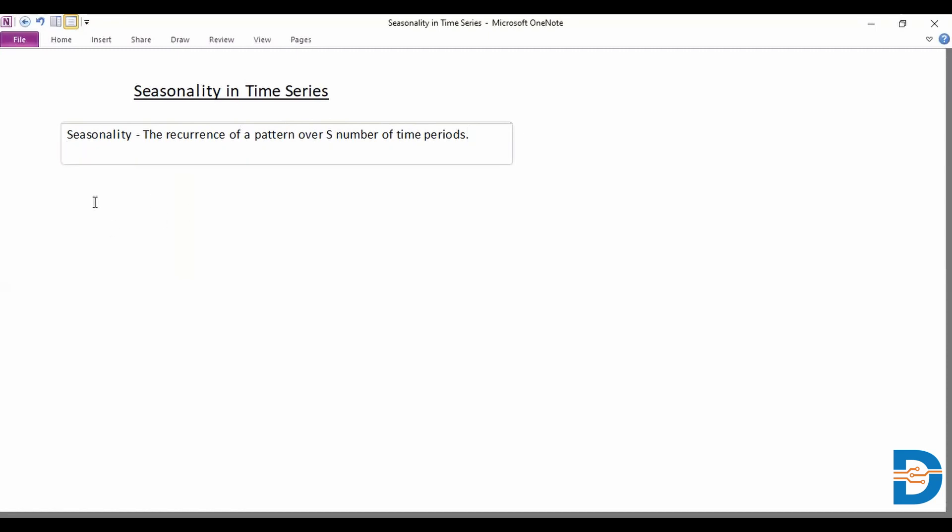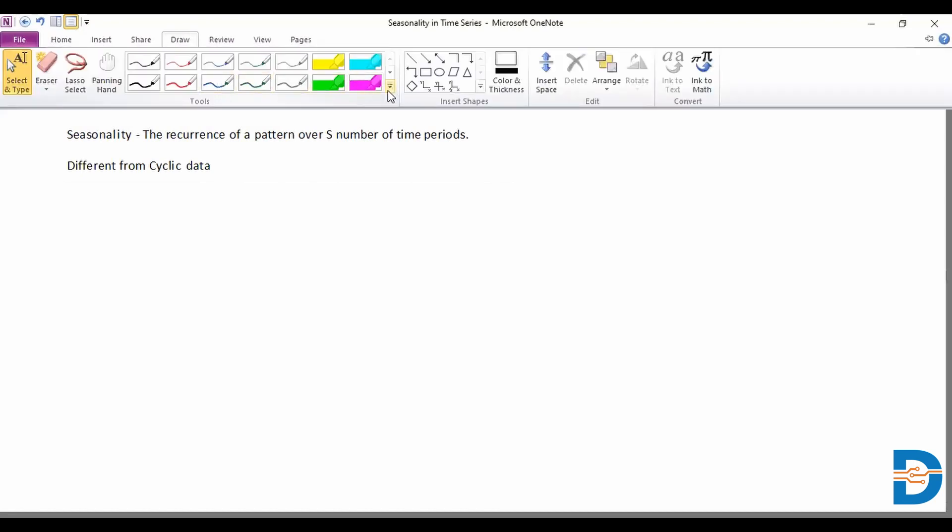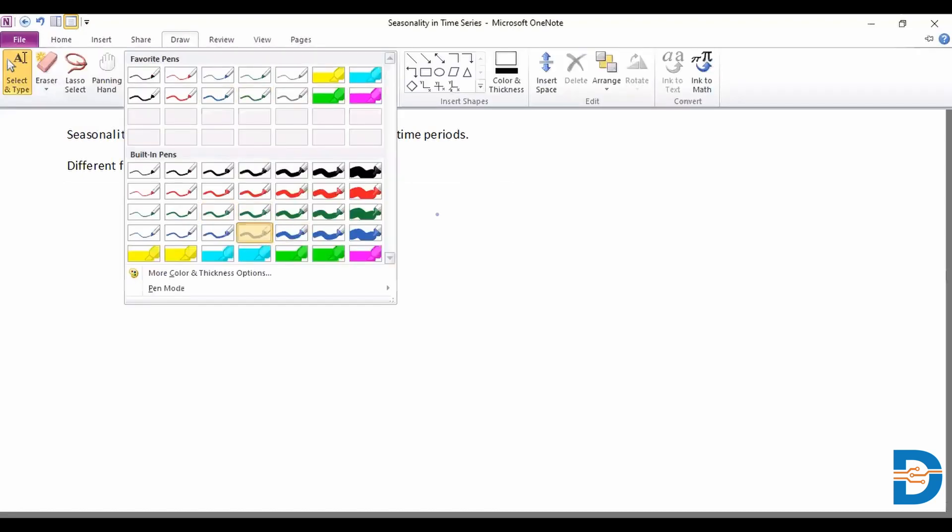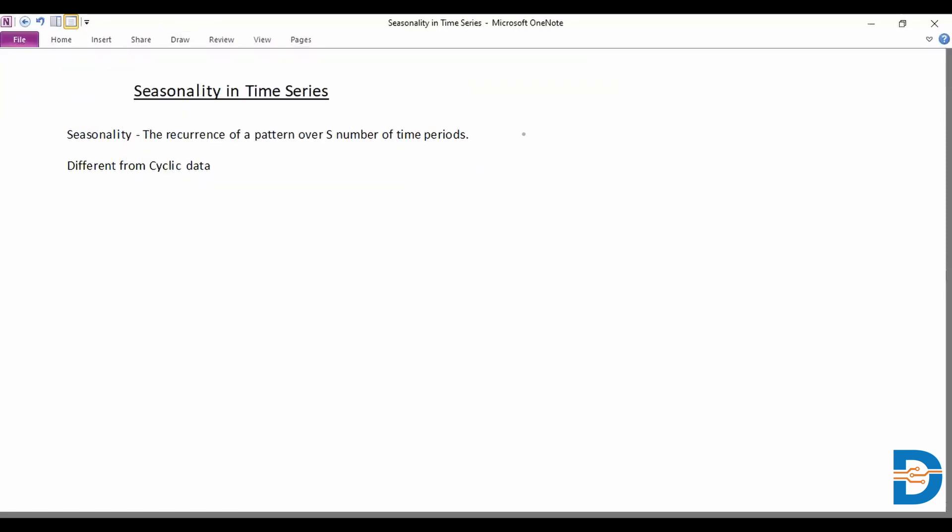Now seasonality is something we must understand is quite different from cyclic data. If we look at something that is purely seasonal, say that's our variable on the y-axis and x denotes the movement of time, we can take a simple cos wave and see how the pattern recurs.